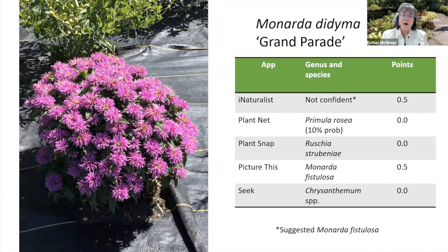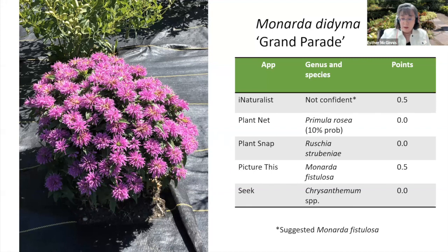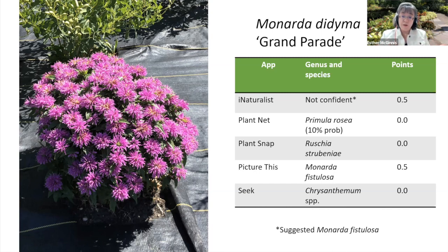Next up, I wanted to do something a little bit harder. I chose Monarda didyma 'Grand Parade.' This is a harder picture because instead of seeing the leaves, all you can see are the flowers. PlantNet, PlantSnap, and Seek were all wrong — they didn't even get the genus right. However, iNaturalist said it wasn't confident but suggested Monarda fistulosa, getting the genus right but not the species, so I gave it half a point. PictureThis also suggested Monarda fistulosa and earned half a point. I'm not exactly disappointed, because this was a really tough picture to identify since the leaves were not showing.